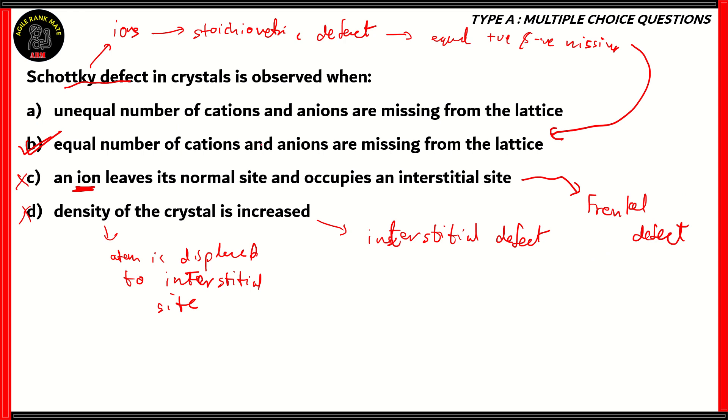Option A is unequal number of cations and anions are missing from the lattice. This is a non-stoichiometric defect, because as you can see in the description, it's unequal number. More cations are missing or more anions are missing. This is a non-stoichiometric defect. Examples include metal excess defect and metal deficiency defects.